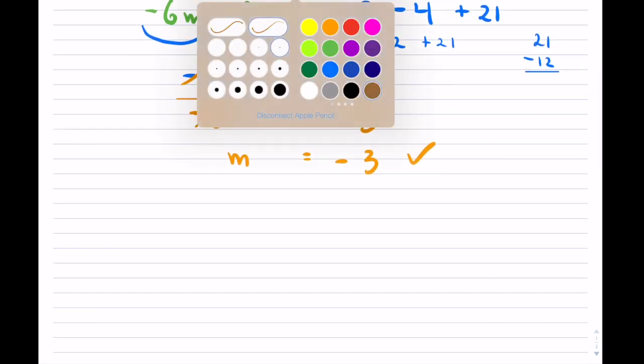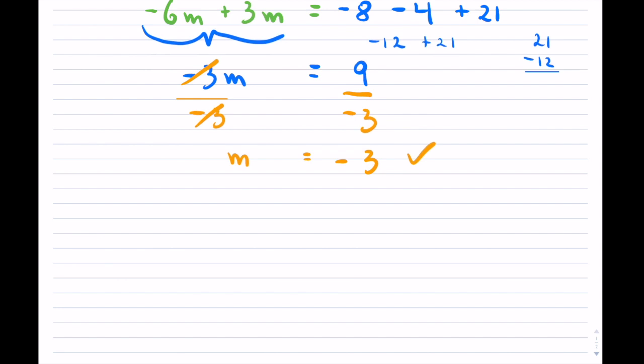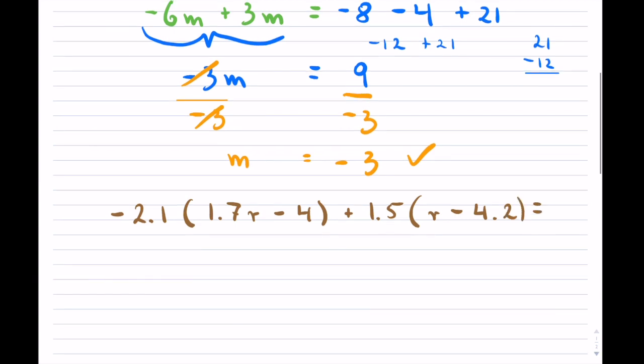So here is another arbitrary one that we can do, and I'll throw in some decimals. It doesn't matter what it is, decimals, fractions, whatever it may be. So let's say if I have something, you know, crazy of this kind, so I'll put r as my variable, and then maybe there's multiple brackets here. All right, so what if we have something like this?